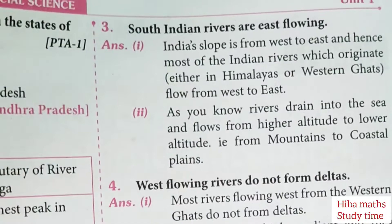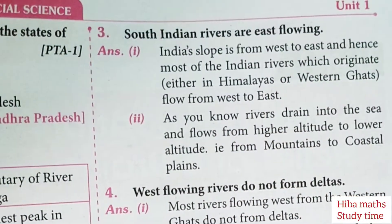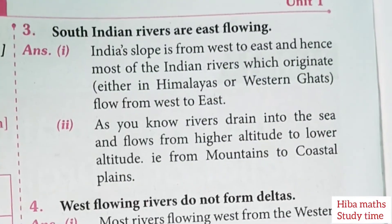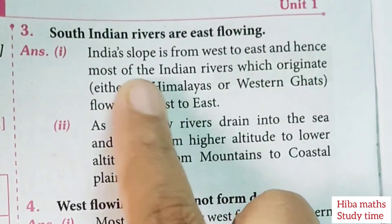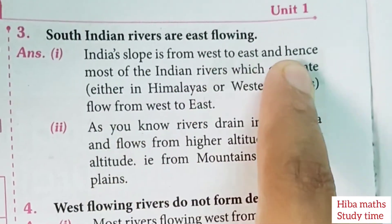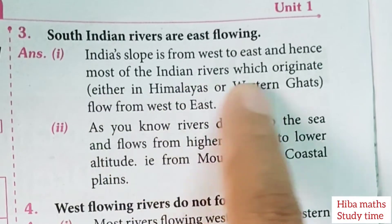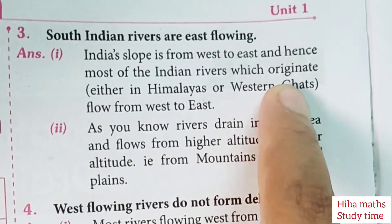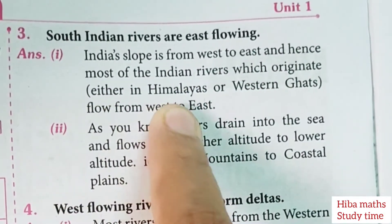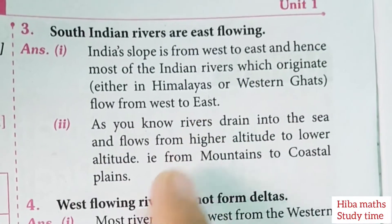South Indian rivers are east flowing. The Indian slope is from west to east, and hence most of the Indian rivers, which originate either in the Himalayas or Western Ghats, flow from west to east.